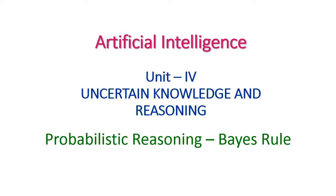In the last video we have seen the introduction about probability and some important terms used in probability theory, like random variables, prior probability, posterior probability, product rules, and axioms of probability. In this video we will see some more details about probability and the important Bayes rule in probability theory.